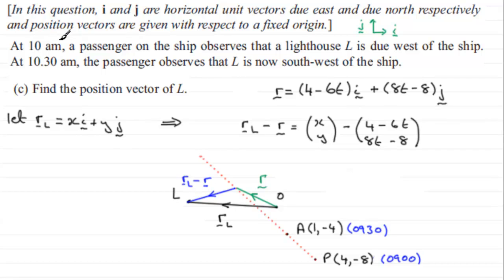Now we know that at 10 a.m., that's one hour after it left P. At 10 a.m., the passenger ship observes that a lighthouse L is due west of the ship. Well let's just find out what this vector is when t equals 1. That would be when the ship has traveled one hour along this line here. So if we just say when t equals 1, what do we have for r_L minus r? Well we've got x and then this is going to be 4 minus 6 which is minus 2. Then you've got minus minus 2 which is plus 2. And for the bottom here when t equals 1 you've got 8 minus 8 so that's 0 and then you're just left with the y. So you've got x plus 2 over y.